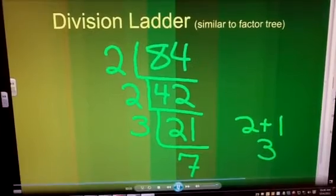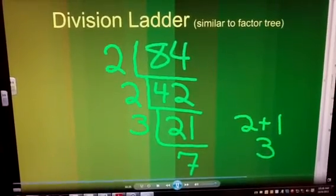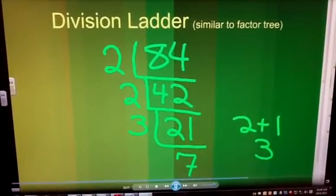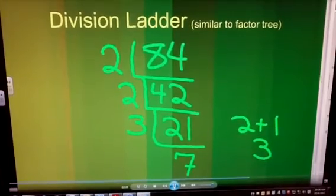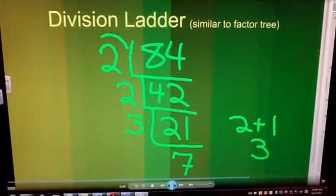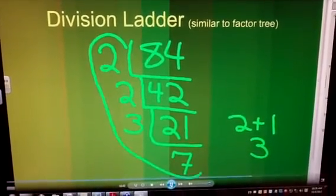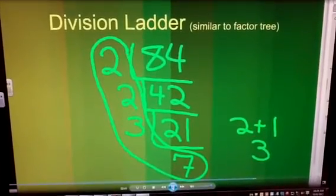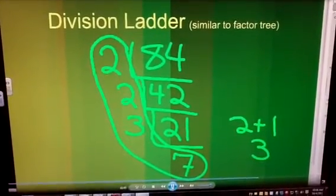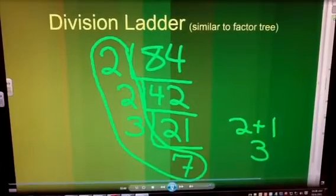Now, I look at my last number, and I realize immediately that seven is a prime number. Therefore, all of the numbers on the left side are prime numbers. And together, they will make my prime factorization using the ladder method.